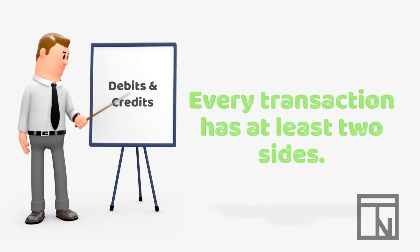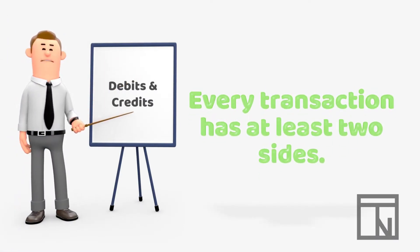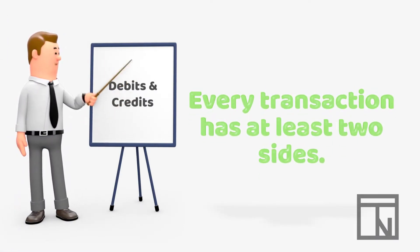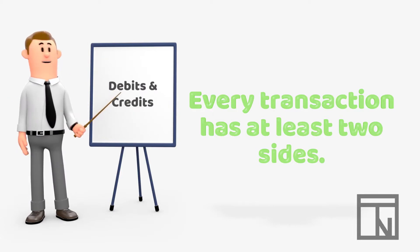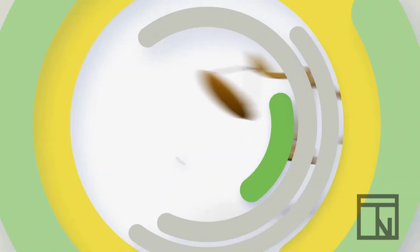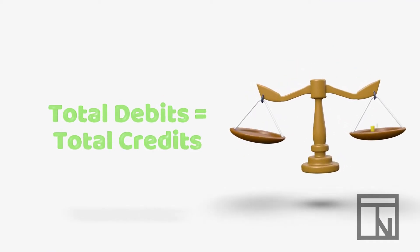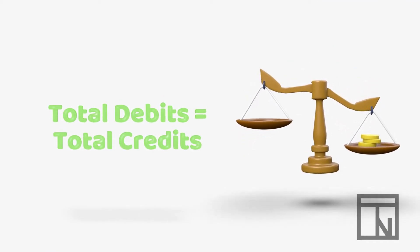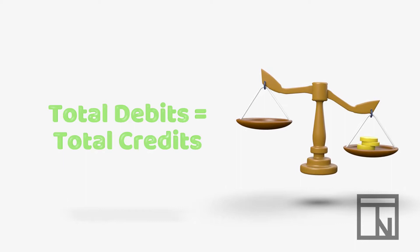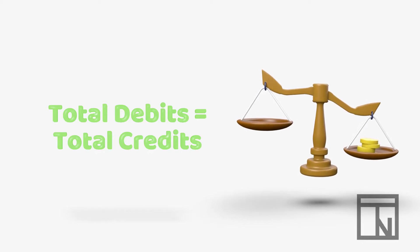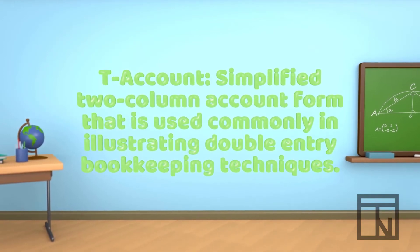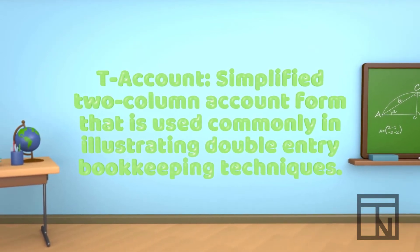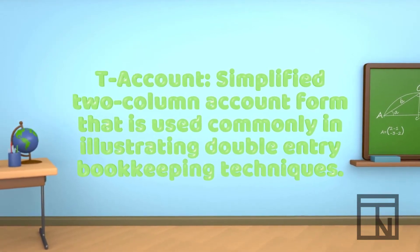In previous videos we have learned that all accounting transactions have at least two sides, and that these sides increase or decrease using special numbers called debits and credits. When these numbers are recorded correctly, total debits always equal total credits and the accounting equation still balances. This helps us know that the accounting is recorded correctly. To help visualize the debits and credits of every transaction and ensure that everything still balances correctly, accountants often use a tool called a T-account.